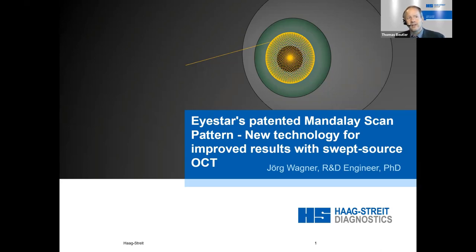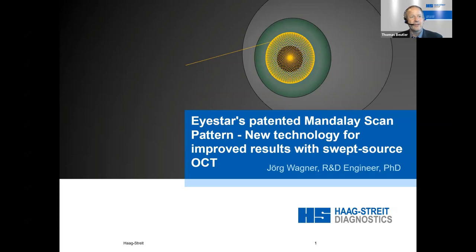Jörg Wagner holds a Master of Science as well as a PhD in Biomedical Engineering, and he has been with Hogsride for more than three years, fully involved in the development of the iSTAR. He has now moved on to aerodynamics for bikes, as you can see on his background, and I would like to welcome him here this evening.